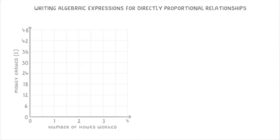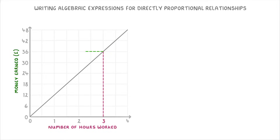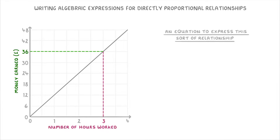We saw in our last video that if two variables, like the number of hours worked and money earned, are directly proportional to each other, then as one of them increases, the other one increases proportionally. So in this case, the more hours you work, the more money you'll earn. In this video, we're going to cover how to write an equation to express this sort of relationship.